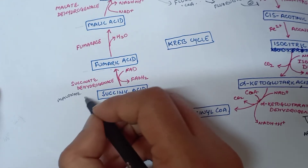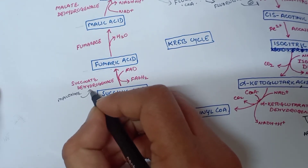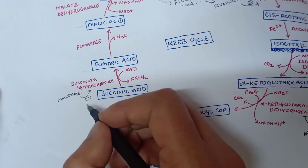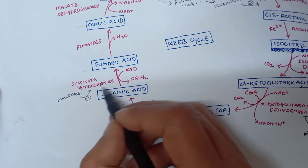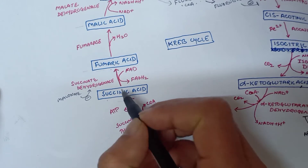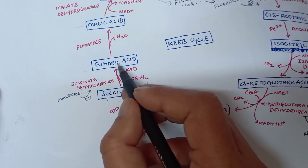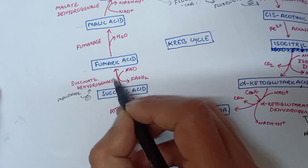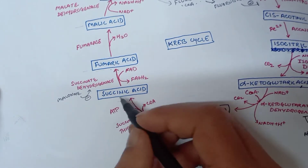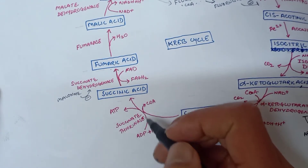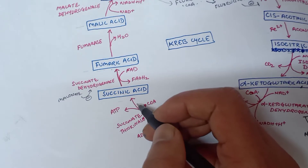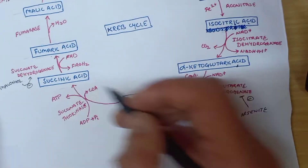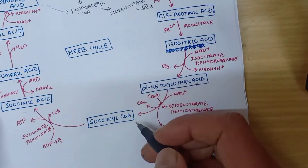The next inhibitor of the TCA cycle is malonate. Malonate will competitively inhibit succinate dehydrogenase enzyme. Succinate dehydrogenase converts succinic acid to fumaric acid, so when malonate inhibits this enzyme, there will be accumulation of succinate.